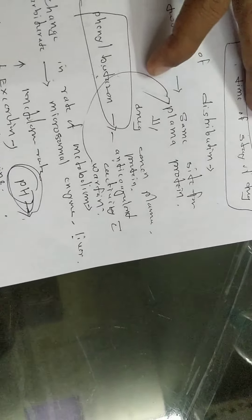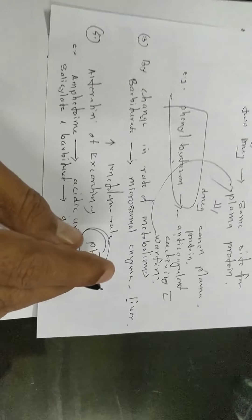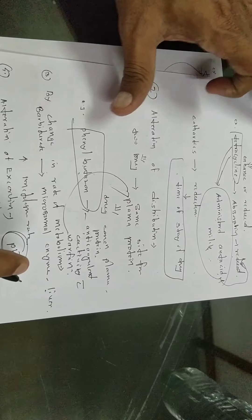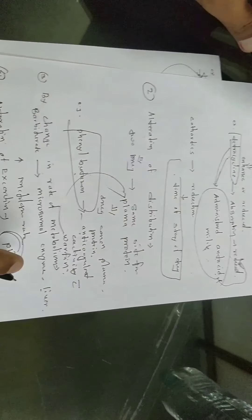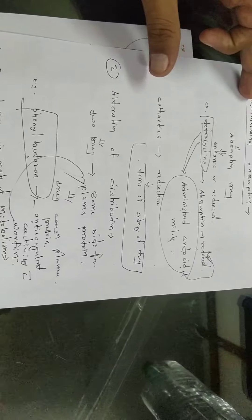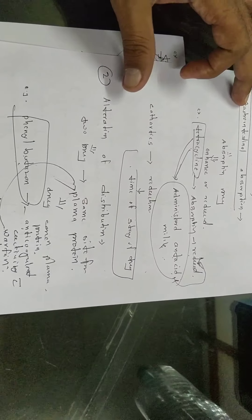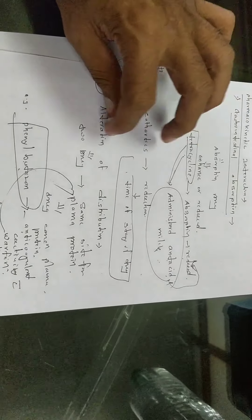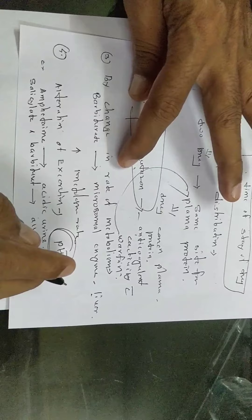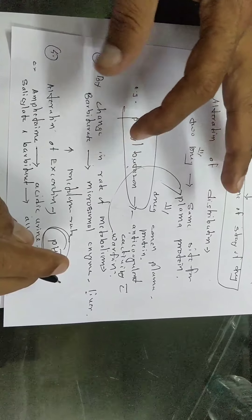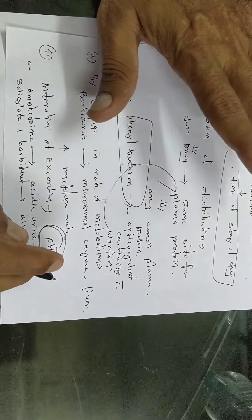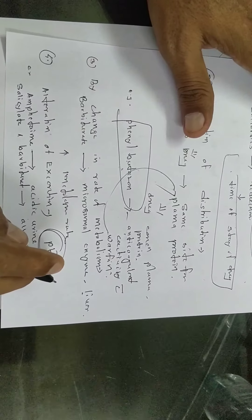These are the pharmacokinetic interactions: gastrointestinal absorption, alteration of distribution, change in rate of metabolism, and alteration of excretion. Now we have studied pharmacokinetic interaction of drugs.